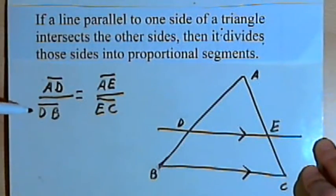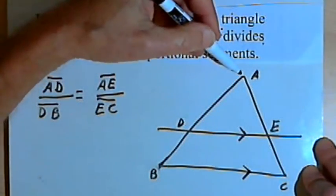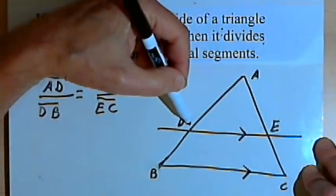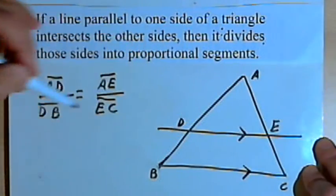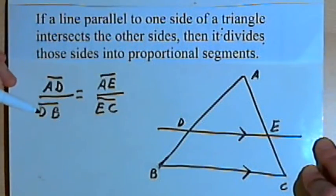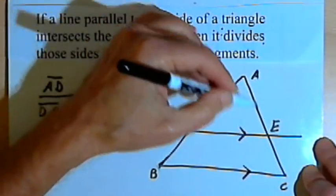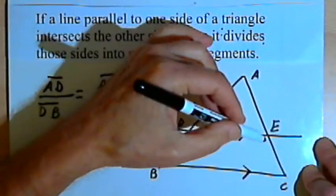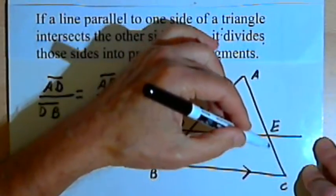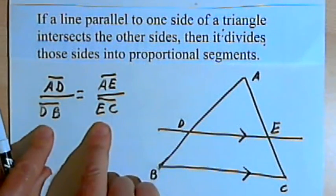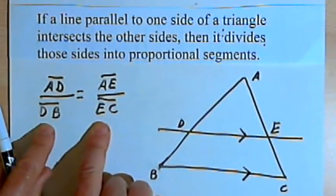For this specific triangle, it would mean that line segment AD over line segment DB would be equal to line segment AE over line segment EC. In other words, the two fractions that I've just made would be proportional to each other.